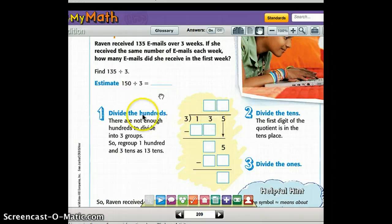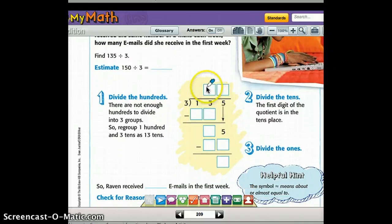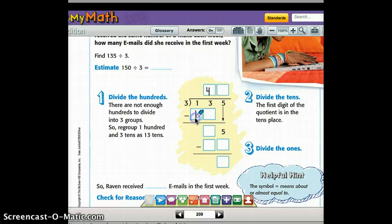3 can go into 13 though. So when we're dividing the hundreds place, it says there are not enough hundreds to divide into three groups because 3 cannot be divided into 1. So we have to regroup that one hundred and three tens. So we're just looking at it as 13 right now. So now we jump to the next place, that tens place. 13 divided by 3. Well, that can work. So 3 goes into 13 four times, and if we multiply, so remember these steps from our last lesson, 3 times 4, we get 12.